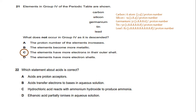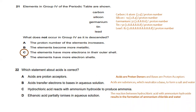Which statement about acid is correct? The first option: acids are proton acceptors. Acids are proton donors and bases are proton acceptors. Acids are substances which neutralize bases to form a salt and water. The reaction between hydrochloric acid with ammonium hydroxide results in the formation of ammonium chloride and water. The correct answer is that ethanoic acid partially ionizes in aqueous solutions.